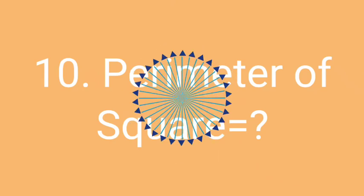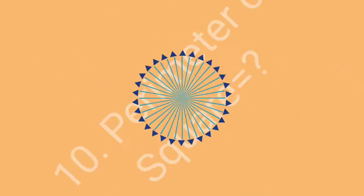Now know the next question: Perimeter of square is equals to what? Think the correct answer of this question within 10 seconds.